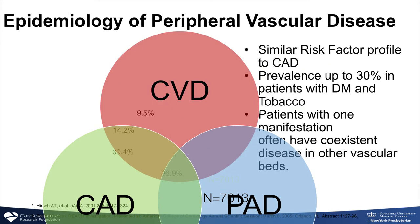Looking at the overlap: about half of patients who have peripheral artery disease will also have significant coronary disease, and vice versa. These patients have a systemic disease — atherosclerosis. About a quarter will also have cerebrovascular disease or carotid stenosis, which can lead to stroke. So stroke, heart attack, and peripheral arterial disease run together.